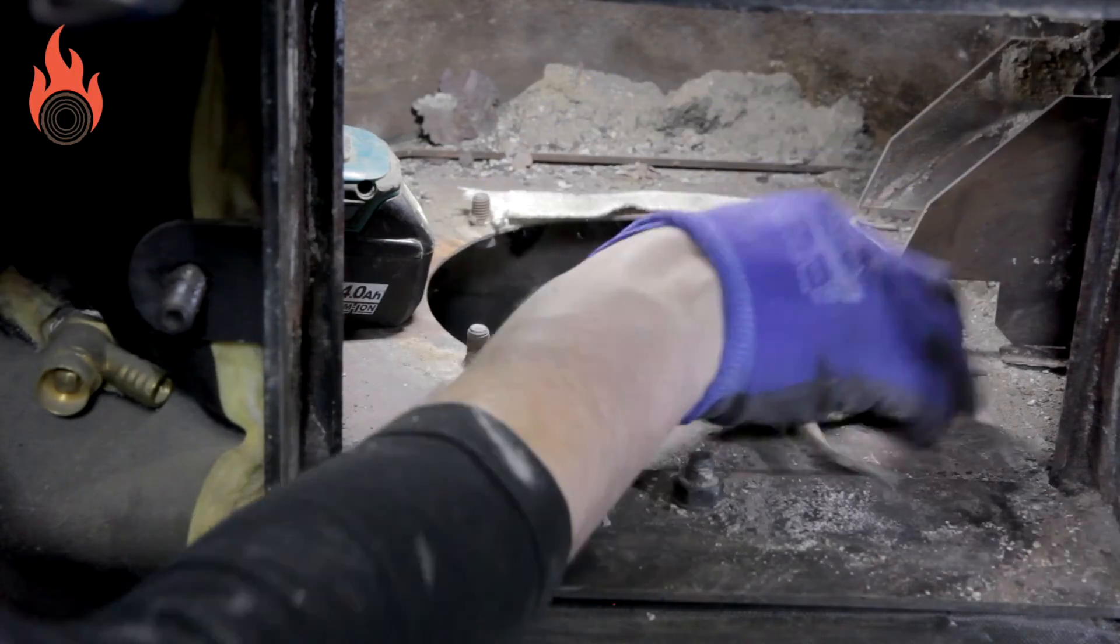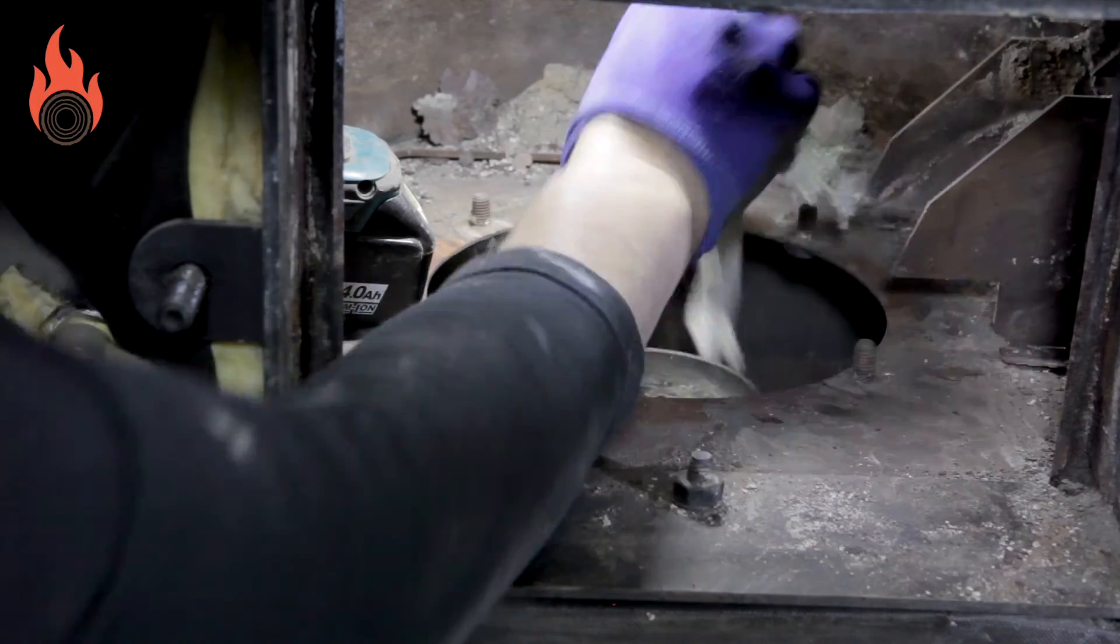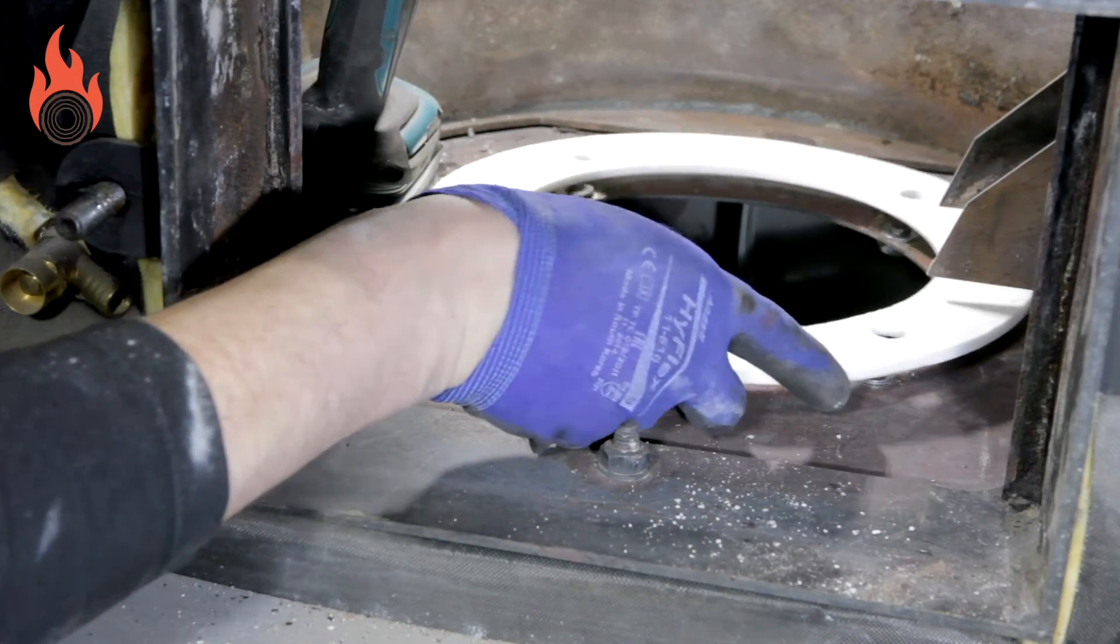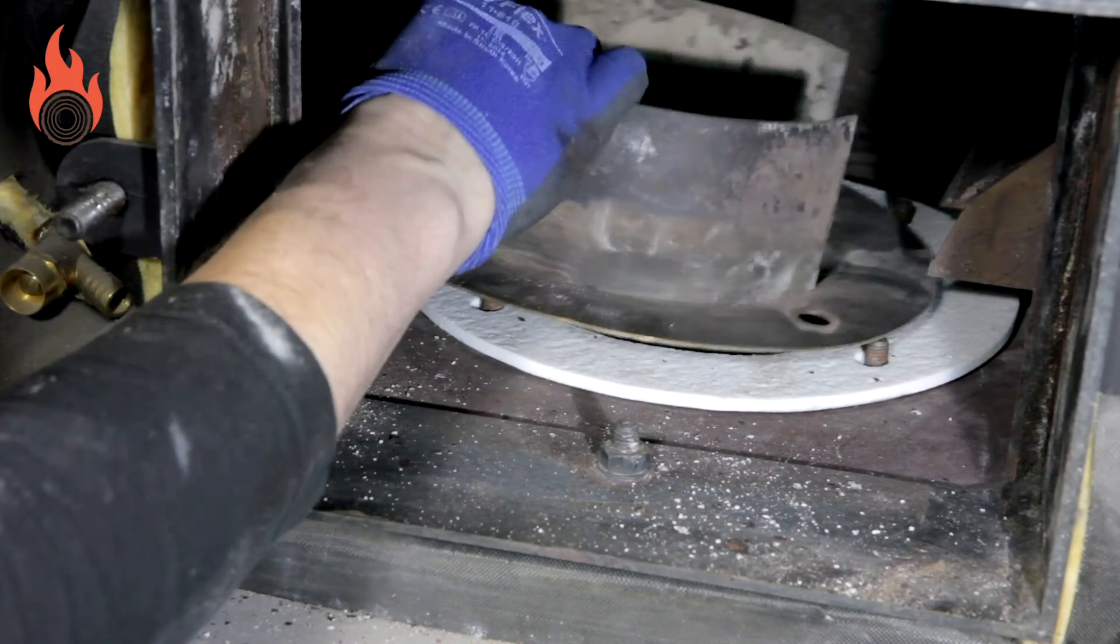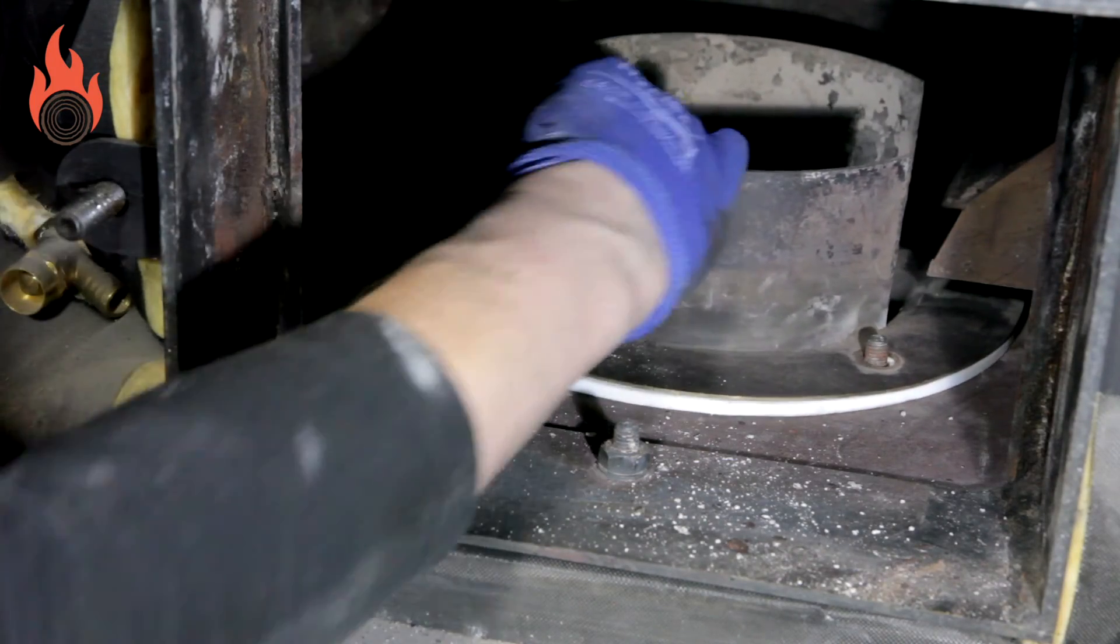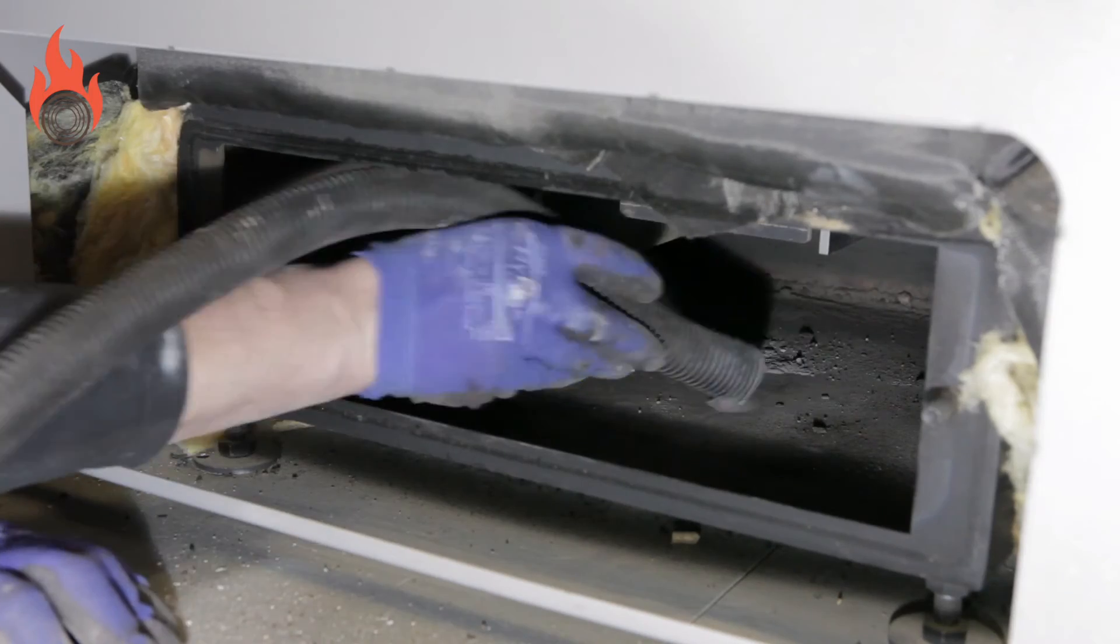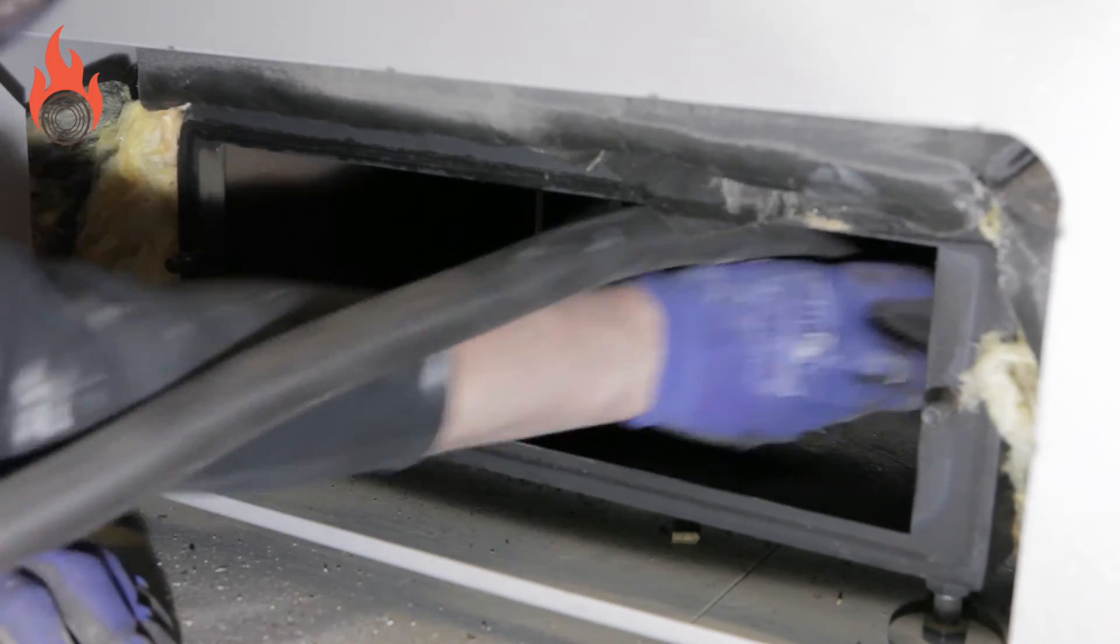Before replacing the upper burner bowl, inspect the gasket material and decide if this needs to be replaced. Using a vacuum cleaner, remove any residual ash in the ash chamber.